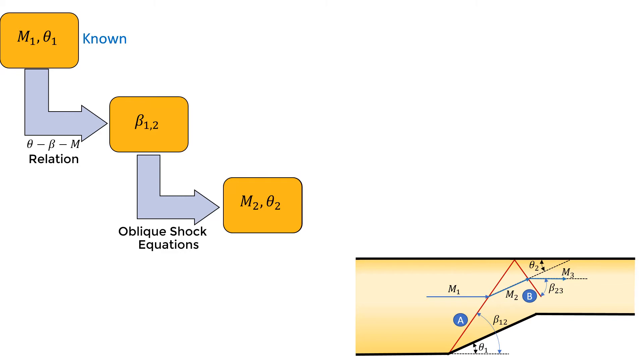We know that in this case the second deflection angle theta 2 is equal to theta 1. So we can again use the beta-theta Mach diagram to find the shock angle and then estimate the Mach number M3 past the shock.